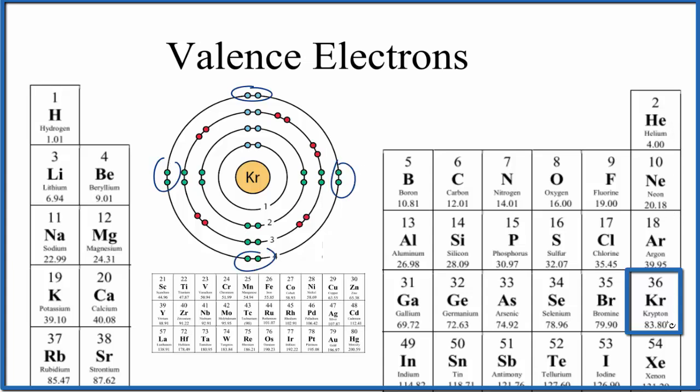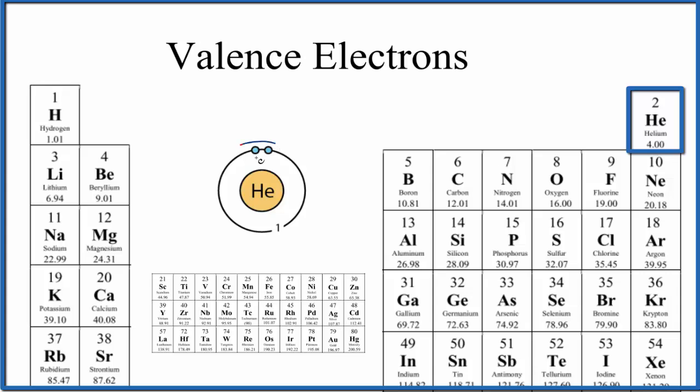So krypton, like all of the elements in group 18 here, they have eight valence electrons, except for one element. Do you remember what it is? Helium. Helium only has two valence electrons, even though it's in group 18, sometimes called 8a.